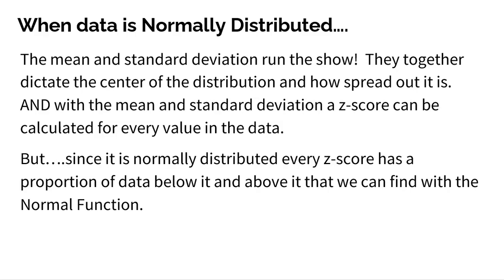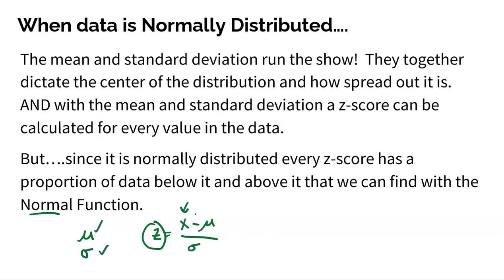So first, when data is normally distributed, a reminder that the mean and standard deviation run the show. They together dictate the center of the distribution and how spread out it is. With the mean and standard deviation, a z-score can be calculated for every single value in the data. And since it's normally distributed, every z-score has a proportion of data below it and above it, and we can find that with the normal function. So everything is truly linked here.